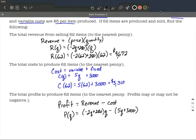Another way we could do this is we've already calculated the revenue at 62 and the costs at 62. We could simply put those two things together and say 9,672 minus 3,310. That difference will be 6,362, and that'll still be in dollars and that'll represent our profit.